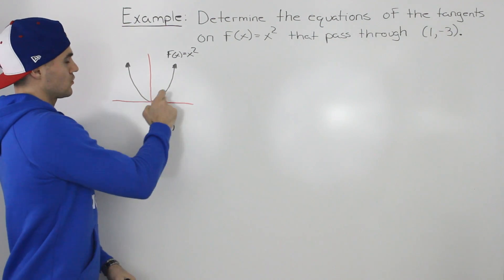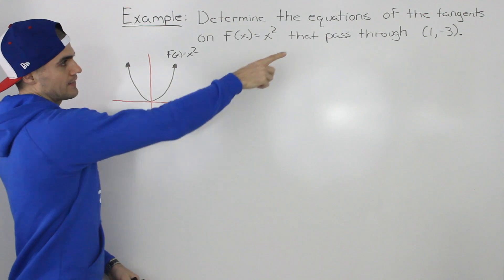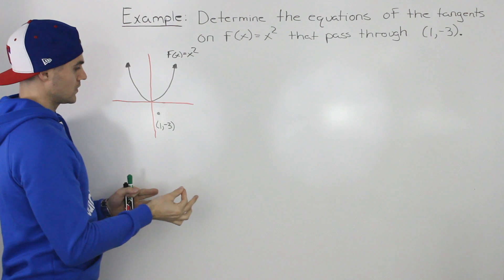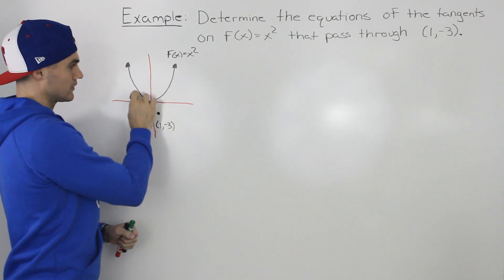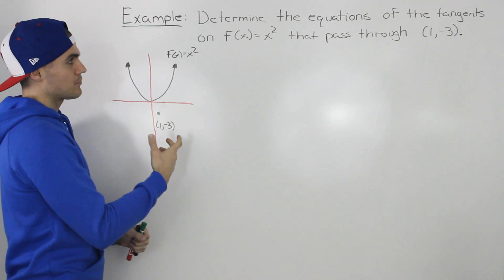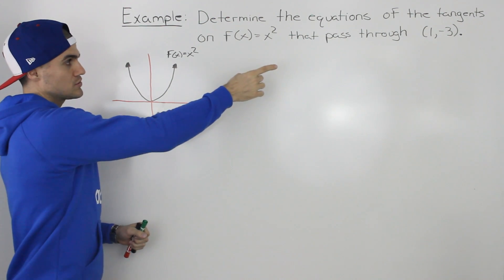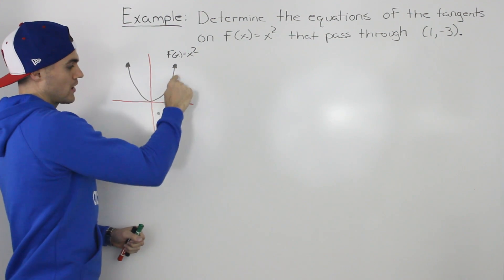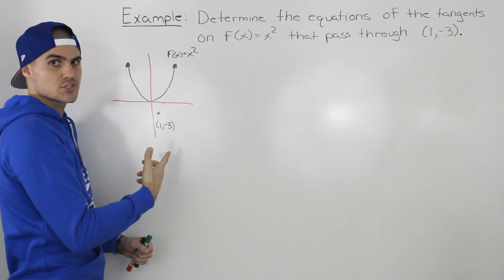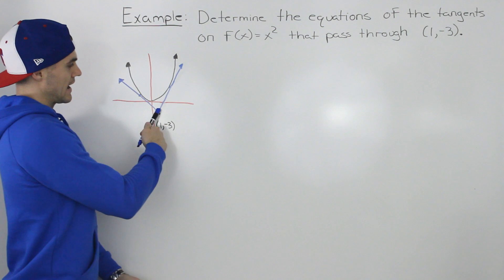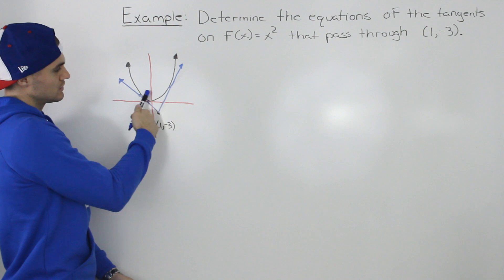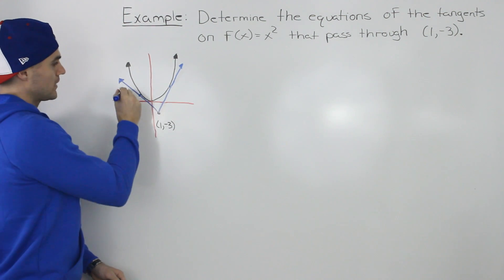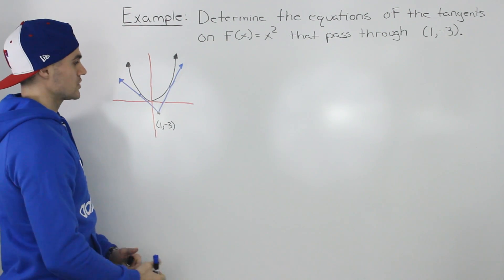So if we take this and graph it, this here represents the function x squared — it's just a parabola. And then if we take that point (1, -3), that would be over here. The first thing to realize about this question that's different than other questions is that this point (1, -3) is not on the function. Usually we're finding equations of tangents using an x value or coordinate that is on the function. But in this case, we have to find equations of tangents to x squared that go through a point not on the function. If we draw these tangents in blue, notice how they're tangent to x squared — just touching the function each at one point — and they're both going through (1, -3). So we have to find the equations of these two blue lines.